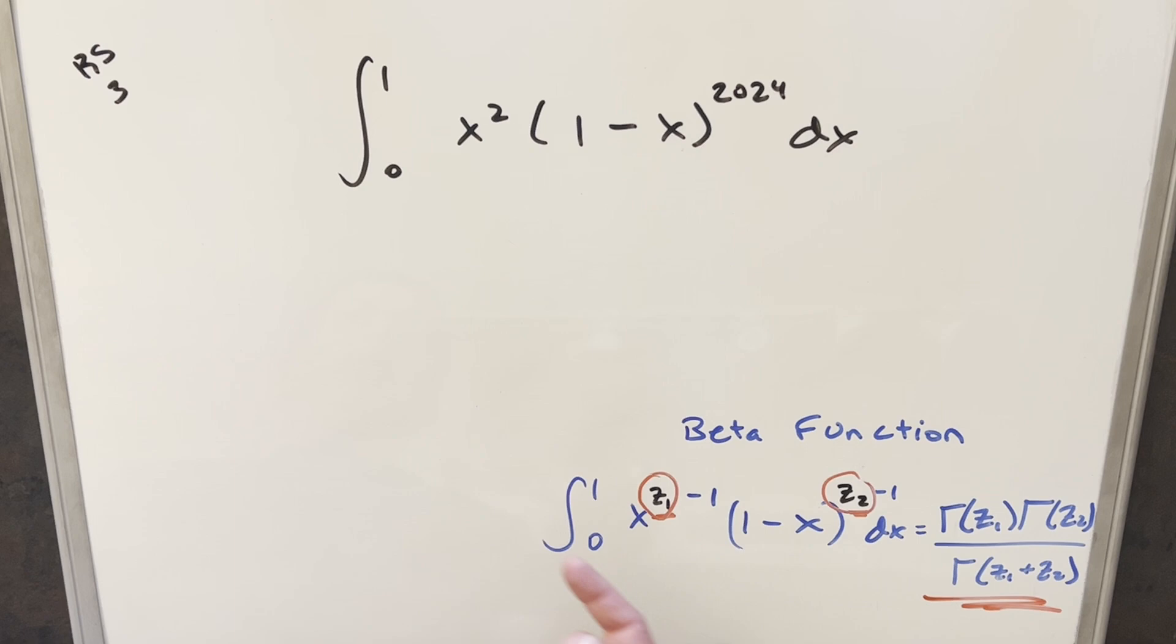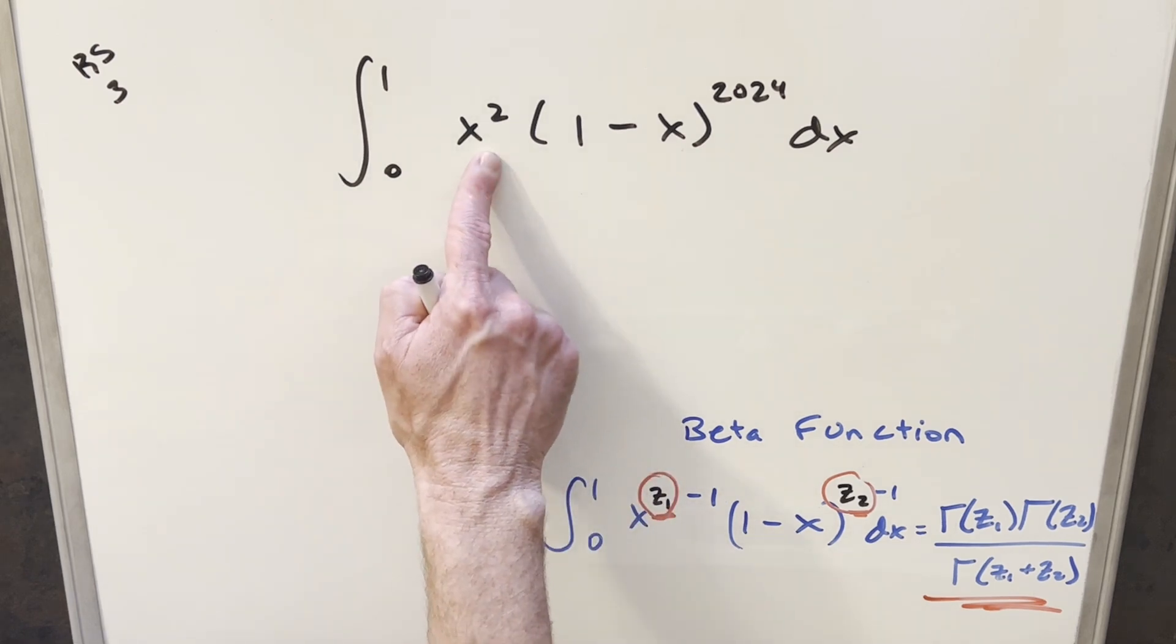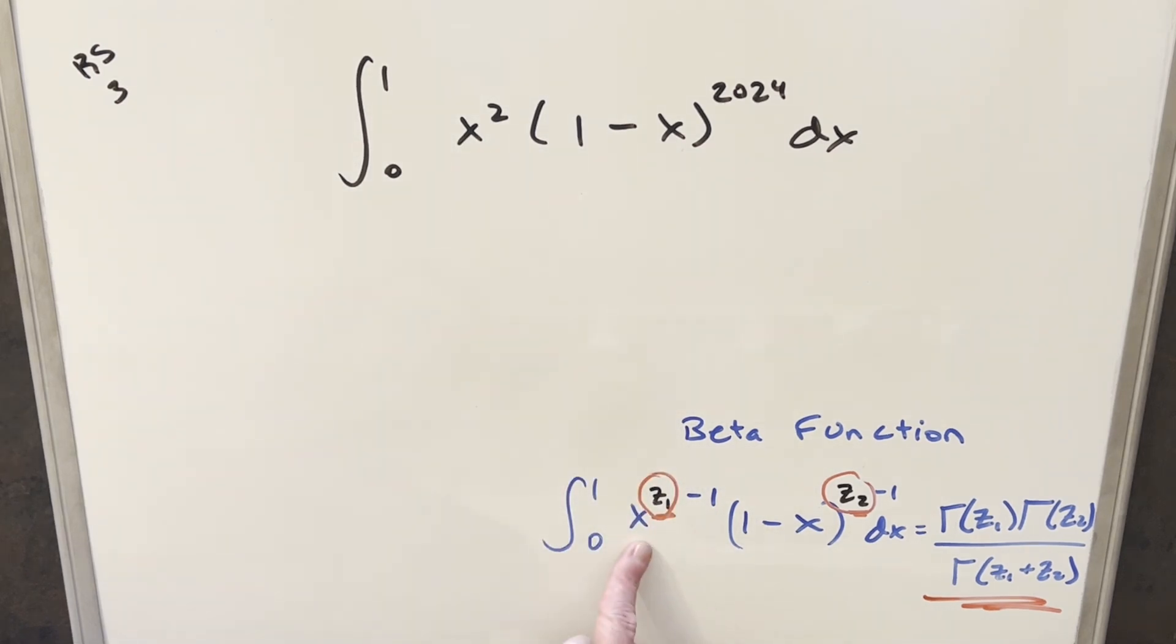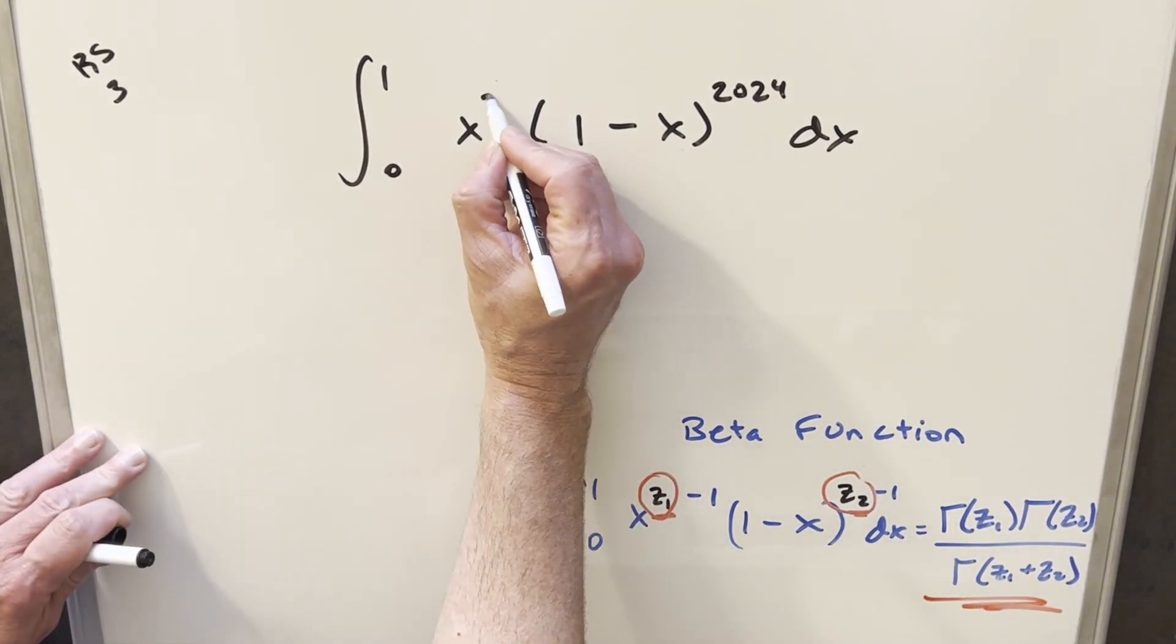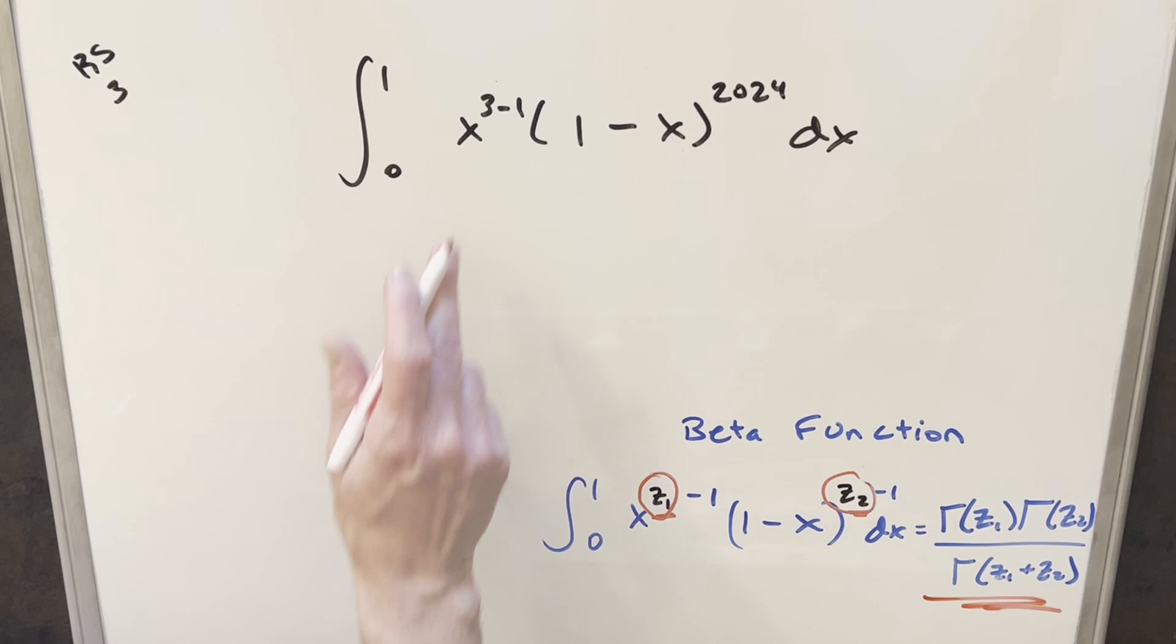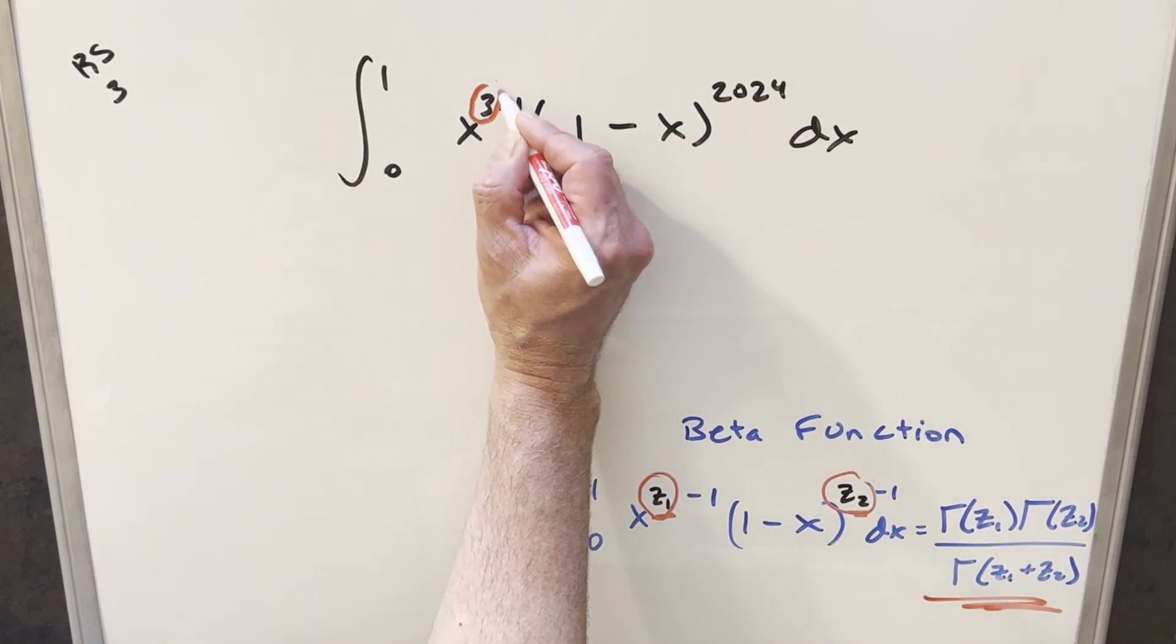Getting this z1 and z2 value, that part's really easy because when we have x squared, we're comparing it to this. I can get this into exactly this form by just rewriting two. Let's just rewrite two as three minus one. And then lining this up with our formula, the z1 value is going to be just three.